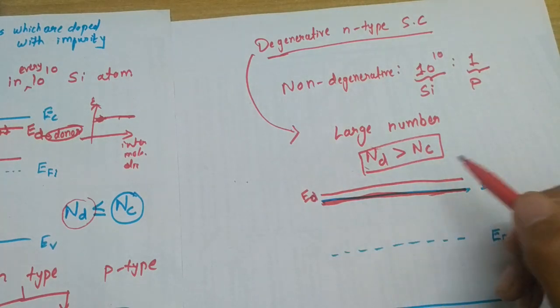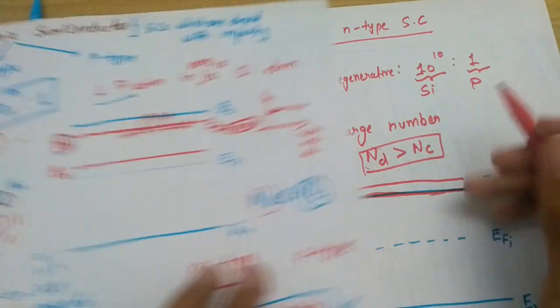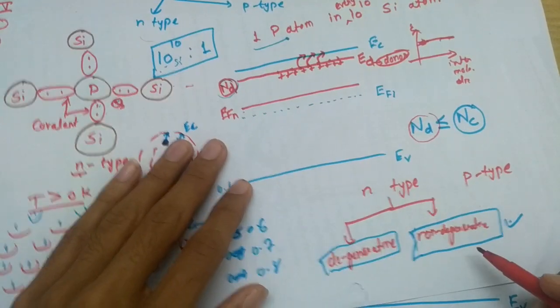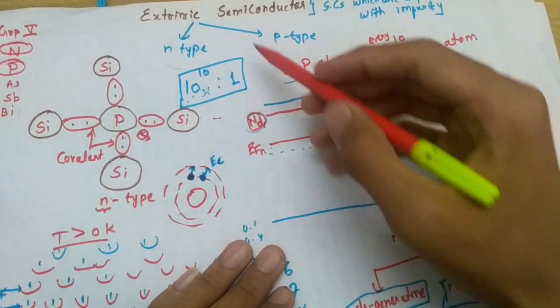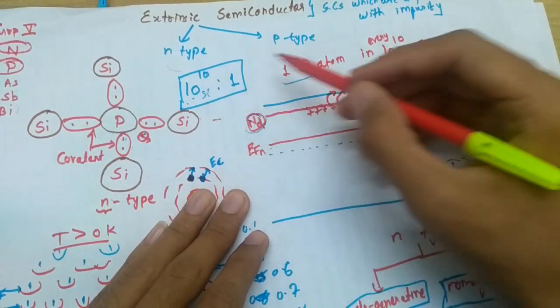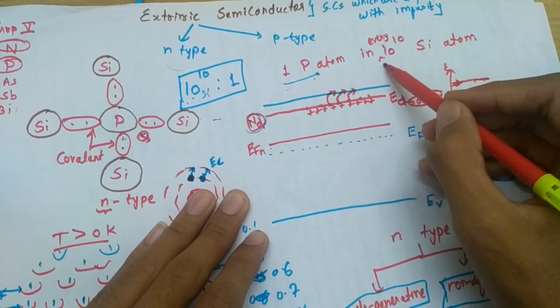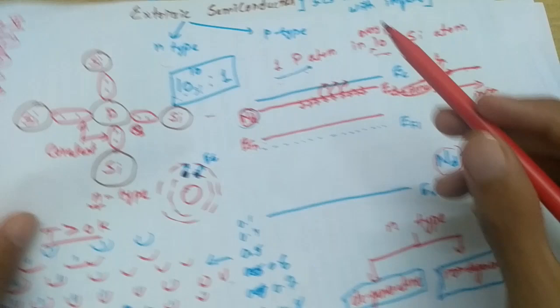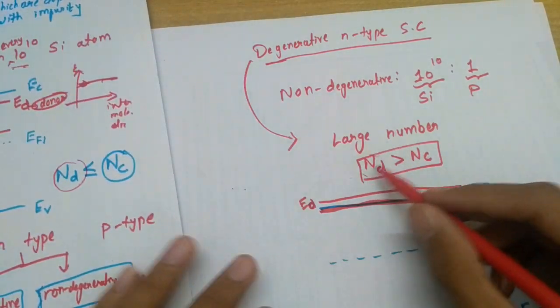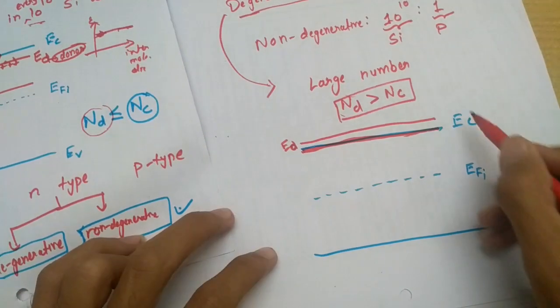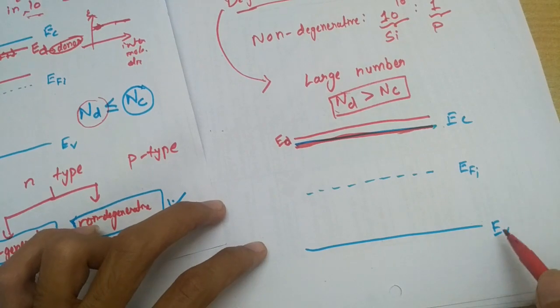As I told, in non-degenerative case the impurity concentration was one phosphorus atom in every 10 power 10 silicon atoms, but over here it is not so. The phosphorus atoms will be very much near.